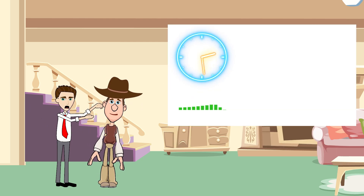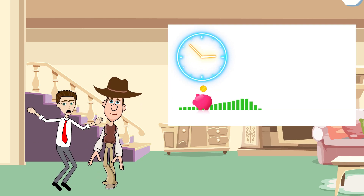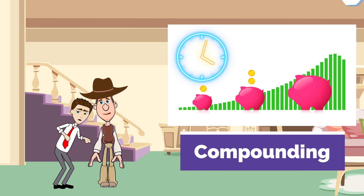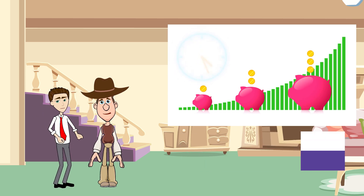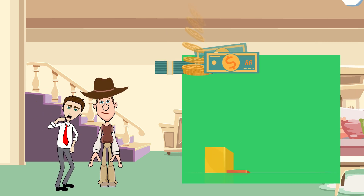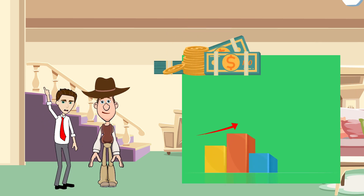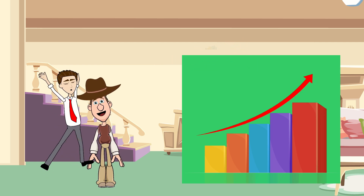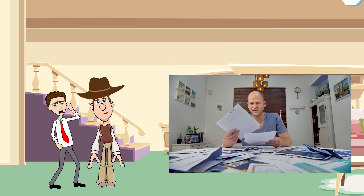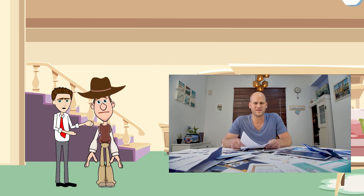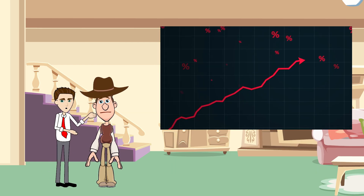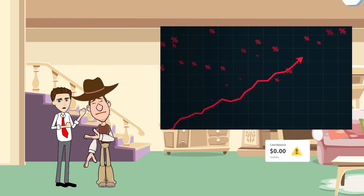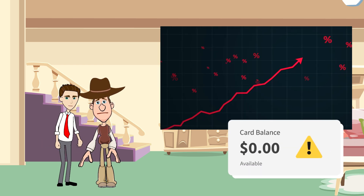As more time passes, the rate of growth accelerates. This effect is called compounding. This is fantastic when it comes to your investments, as they can grow exponentially, but devastating when it comes to your loans, as the amount you owe increases quickly, sending you into a debt trap.